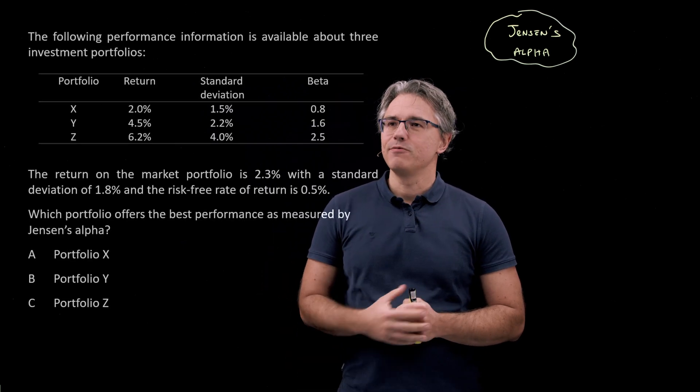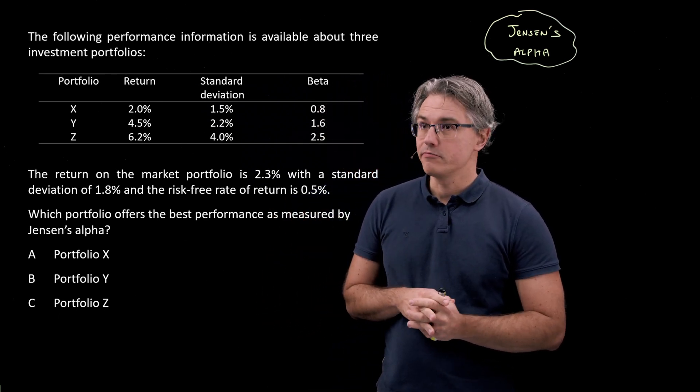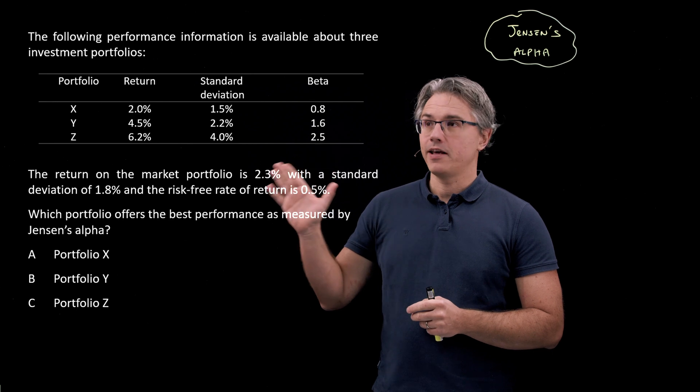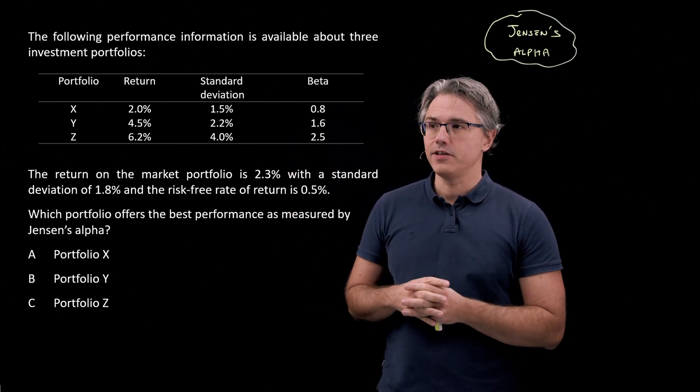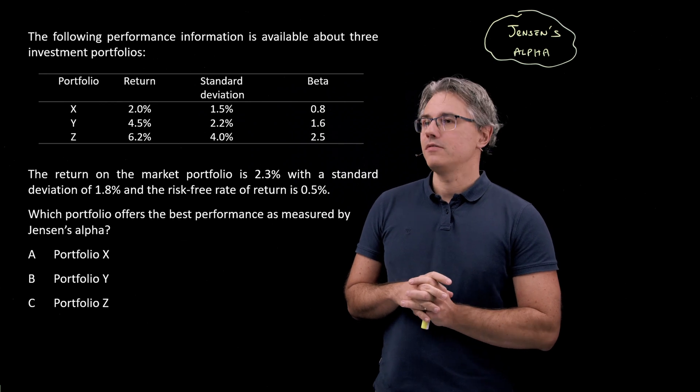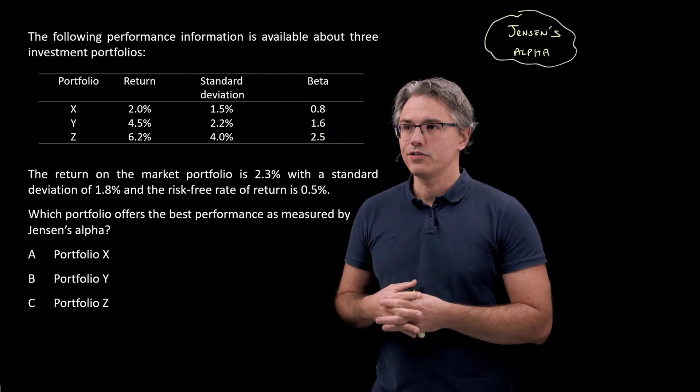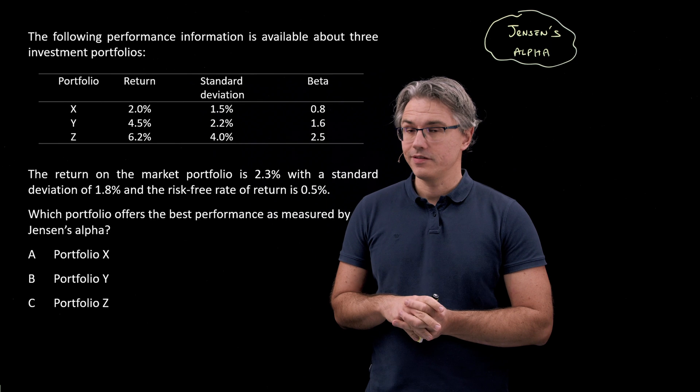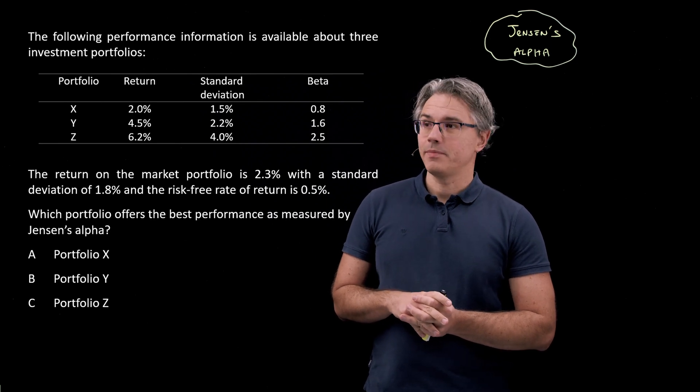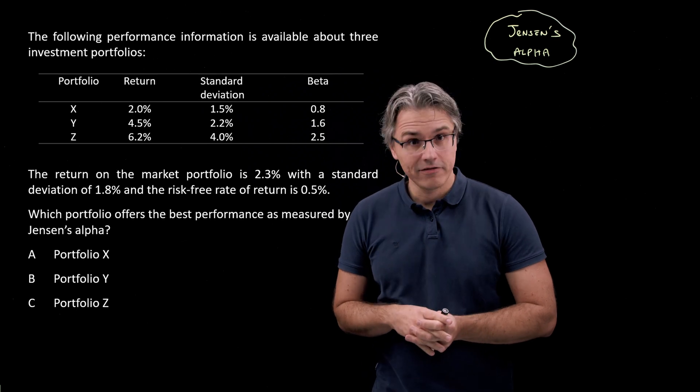So this is the question which I want us to have a go at. If you watched the previous two videos, you will recall these figures. For portfolio X, Y and Z, we've got some performance information, including return, standard deviation and beta. We also have the return on a market portfolio, 2.3%, its standard deviation and a risk-free rate of return equal to 0.5%. And we're asked about which portfolio offers the best performance as measured by Jensen's Alpha.